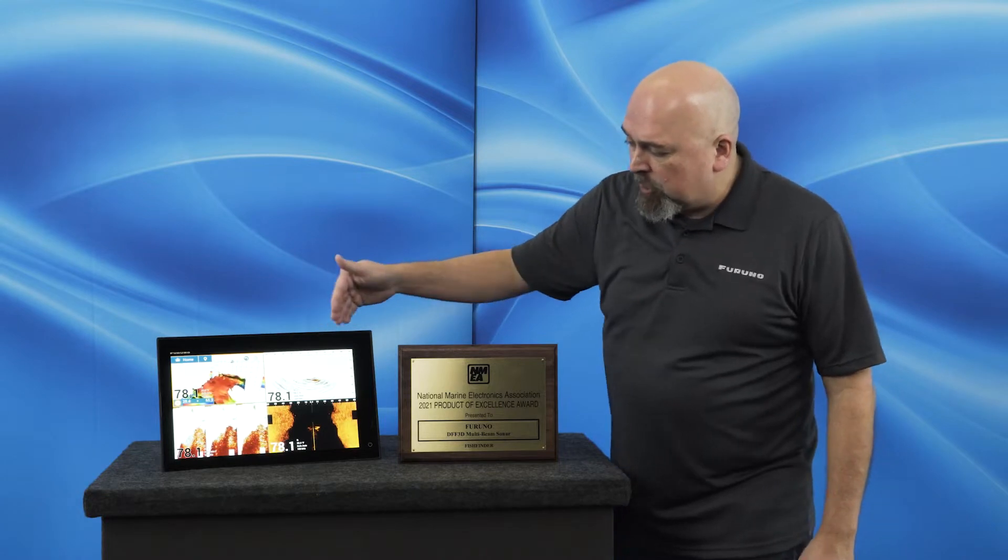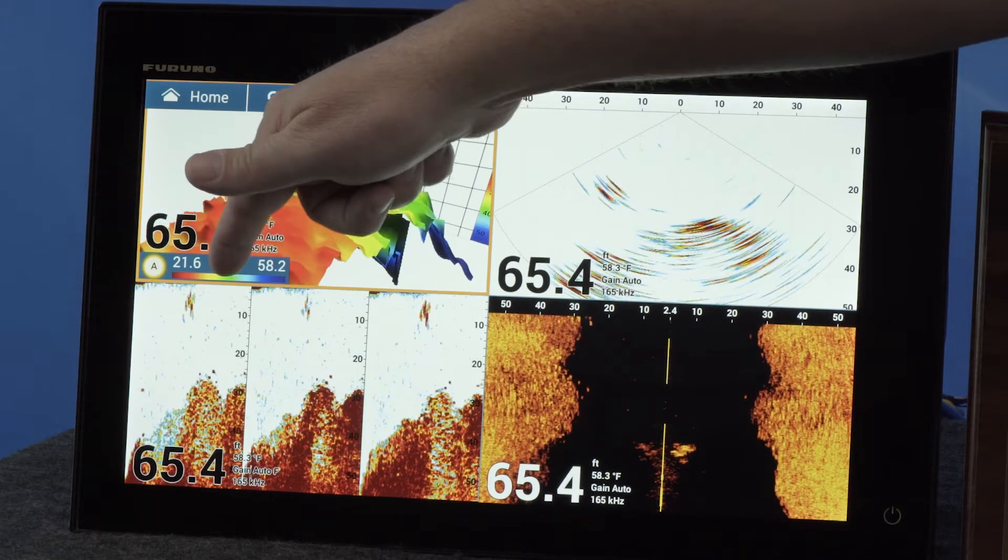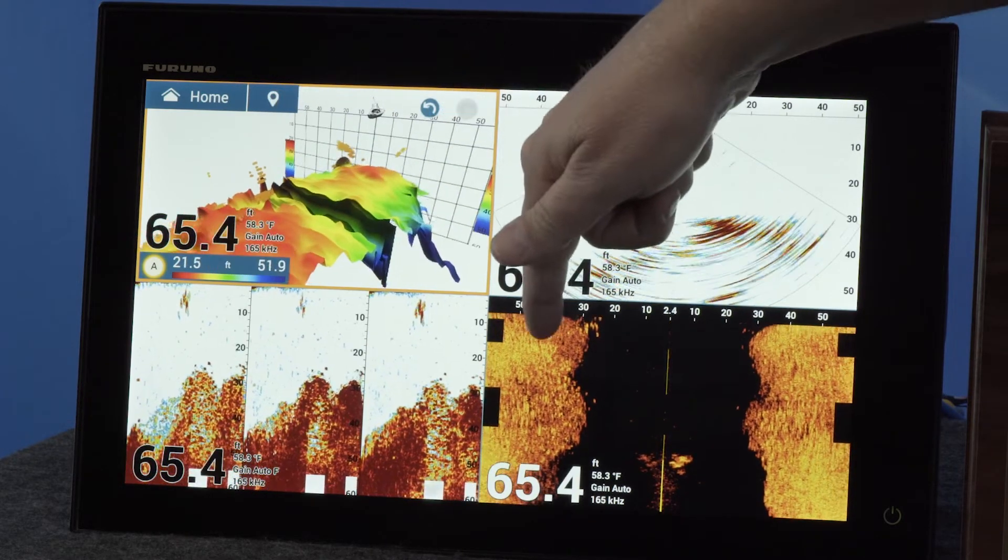The DFF3D has four different display modes that really make it easy to use: the 3D history mode, the cross section mode, the triple beam mode, and the side scan mode.